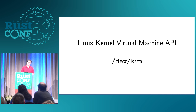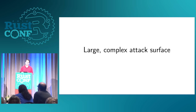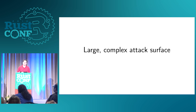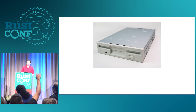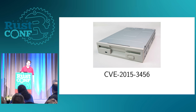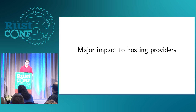When you're building a virtual machine, you provide various things like virtual hardware. The problem with virtual hardware is that it's a very large, very complex attack surface area. For example, there was a vulnerability in the QEMU virtual machine based off of floppies. Even if you didn't have an actual floppy being emulated, the floppy drive was there, and there was a buffer overflow in it. This was a major impact to hosting providers where they had to go rework and reboot all of these VMs, upgrade, and deal with this problem.